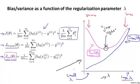By now you've seen bias and variance from a lot of different perspectives. What I'd like to do in the next video is take the insights we've gone through and build on them to put together a diagnostic called learning curves — a tool I often use to try to diagnose whether a learning algorithm may be suffering from a bias problem, a variance problem, or a little bit of both.